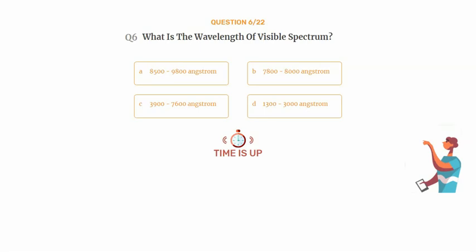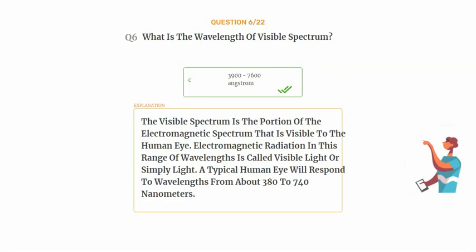The correct answer is Option C: 3,900 to 7,600 angstrom. The visible spectrum is the portion of the electromagnetic spectrum that is visible to the human eye. Electromagnetic radiation in this range of wavelengths is called visible light or simply light. A typical human eye will respond to wavelengths from about 380 to 740 nanometers.